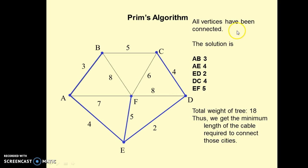So all vertices have been connected. We had six vertices, so all of them are connected. All six cities are connected by network.